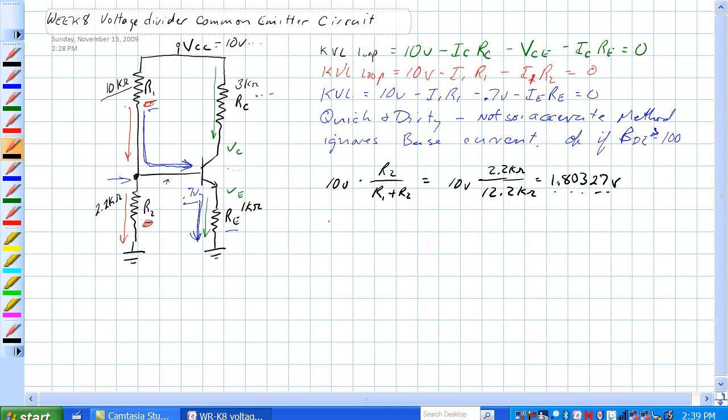You can store that in your calculator if you want to, but since this isn't too accurate, then this will work just fine. Next thing, voltage at the emitter is equal to voltage at the base minus 0.7 volts, and that's equal to 1.80327 volts minus 0.7 volts equals 1.10327 volts.